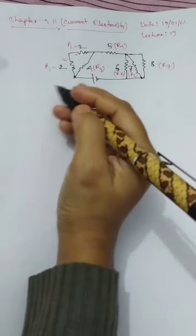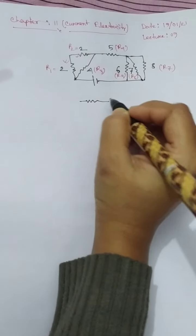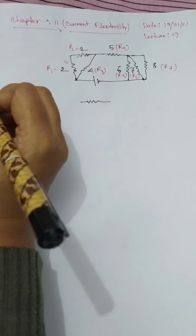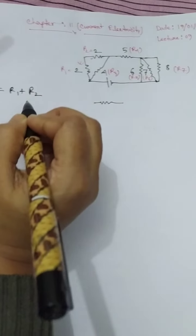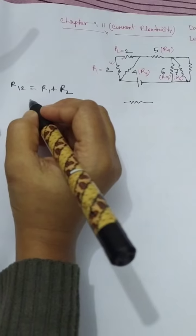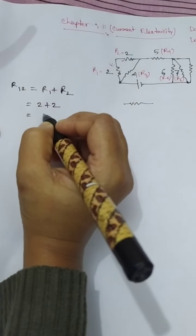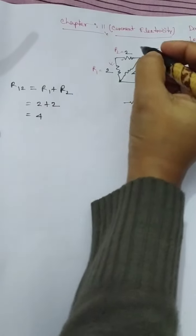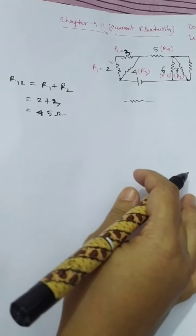Since these two resistors are in series, instead of using both separately we can simplify them. The equivalent resistance R12 will be R1 plus R2. R1 is 2 ohm and R2 is 3 ohm, so R12 equals 5 ohm.